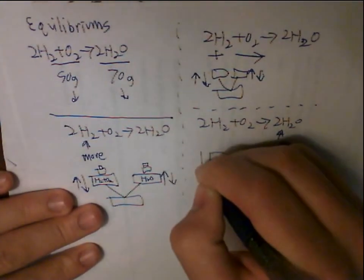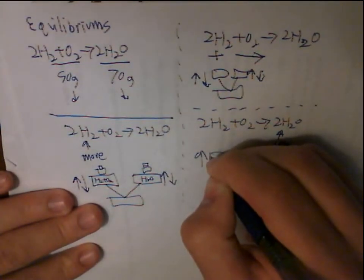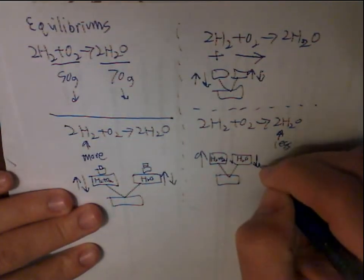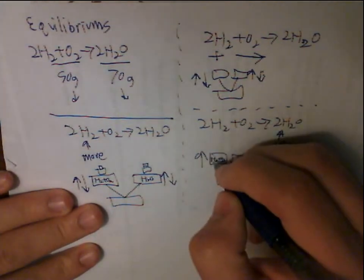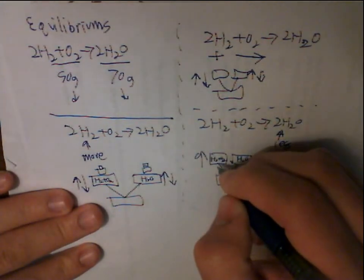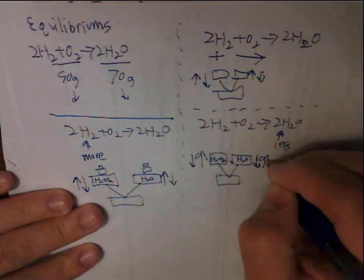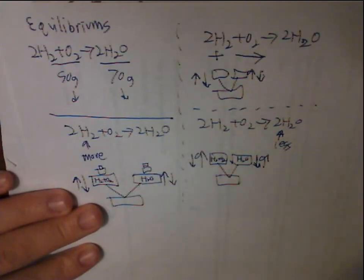This side goes down, and this side goes up, H2 and O2. So when this side goes down, because there's less H2O, and this side goes up, that means that some of this H2 and O2 will get turned into more water. So this side goes down, this side goes up, and it's in equilibrium again.